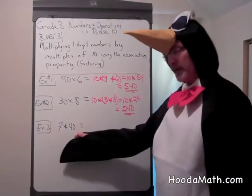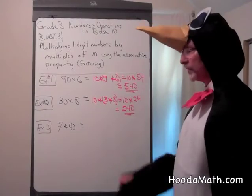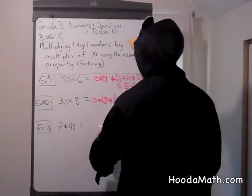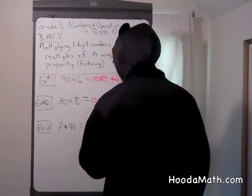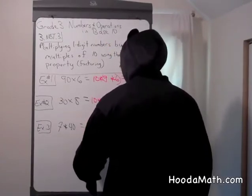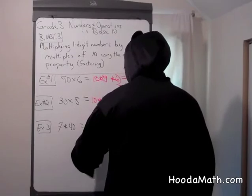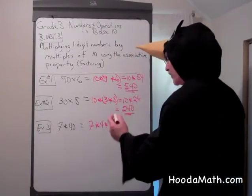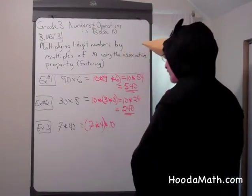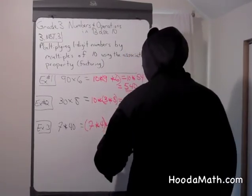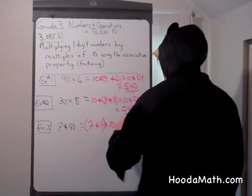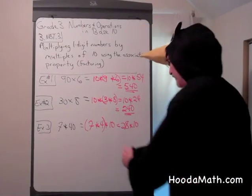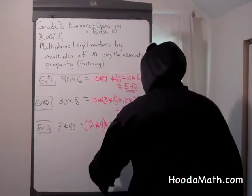Now let's say we have the multiple of 10 as the second factor. We can still factor 40 into 4 times 10, and we'll just have the 10 last. So we have 7 times 4 times 10. We'll associate 7 times 4, which gives us 28, times 10. And remember the rule of multiplying 10 times a whole number, and you get 280.